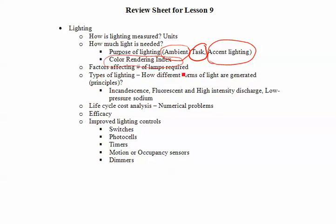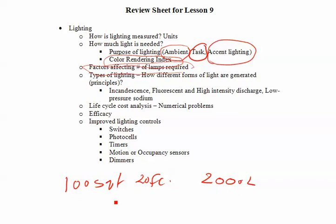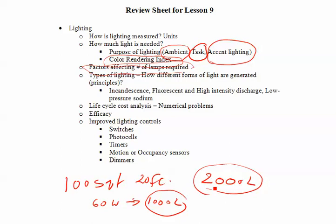When you have a room, how many lamps are required? That depends on the total area and lumens needed. Each bulb gives out a certain number of lumens, and you calculate how many bulbs you require. For example, a room of 100 square feet needing 20 foot candles means 20 lumens per square foot, so 20 times 100 equals 2,000 lumens. If a 60-watt bulb gives 1,000 lumens, you need two bulbs. Other factors include wall reflectance and light fixture efficiency.